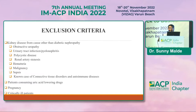Exclusion criteria included kidney disease from causes other than diabetic nephropathy, such as obstructive uropathy, UTI, polycystic disease, renal artery stenosis, hematuria, malignancy, and sepsis. Also excluded were patients consuming uric acid lowering drugs, pregnant patients, and critically ill patients.